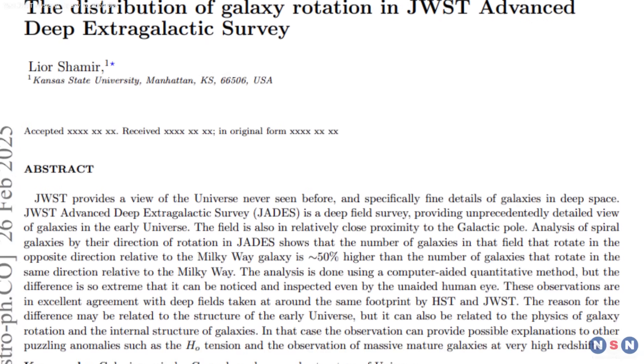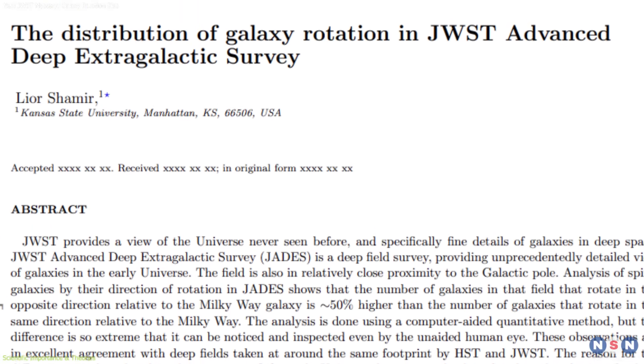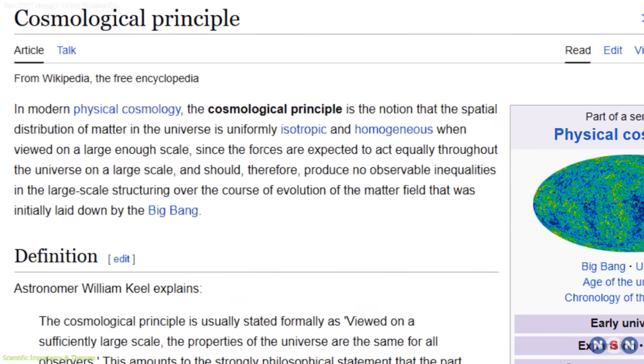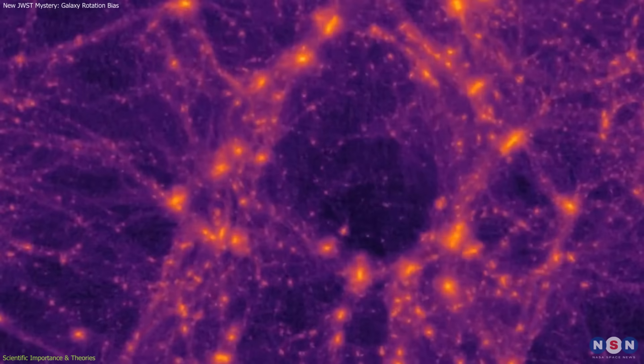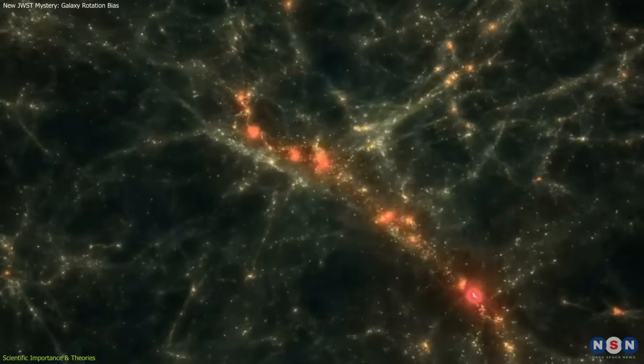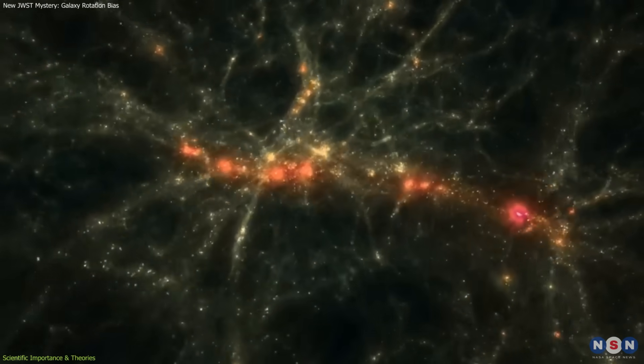The significance of this finding lies in what it challenges. The cosmological principle is one of the cornerstones of modern cosmology. It assumes that, on the largest scales, the universe is homogeneous and isotropic, essentially, that no place or direction in space is special.